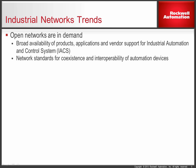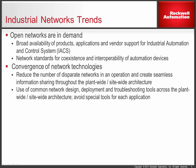Regarding industrial network trends, a continuous trend is that customers are looking for a broad availability of products from a broad availability of vendors to meet their application requirements for industrial automation and control systems. They're also looking for network standards — they need co-existence of different technologies, multi-discipline control and information on a common network infrastructure, and interoperability of those devices for a complete seamless plant-wide information system. But they're also looking for convergence of network technologies, wanting to remove disparate technologies and have a common, seamless, information-sharing, plant-wide architecture.